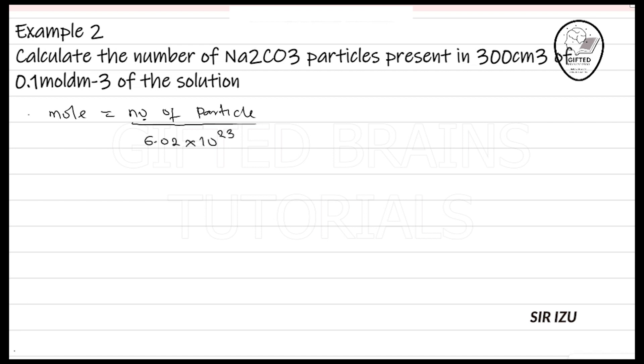This is the relationship. Hence, on cross multiplying, number of particles equals mole times 6.02 times 10 to the power 23. This is what we use to get our number of Na2CO3 particles. The problem here becomes: how do I get the mole? Once they ask you this kind of question, in that same question you will be given further information to get the mole.